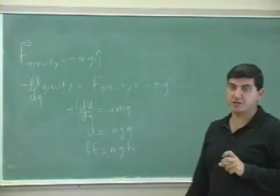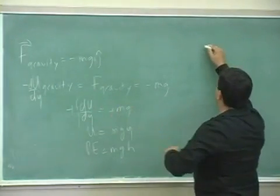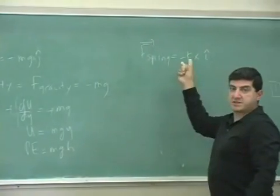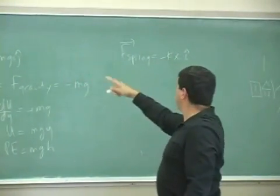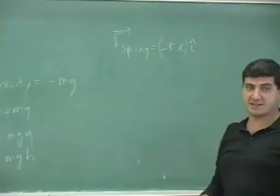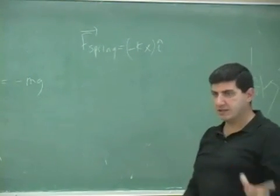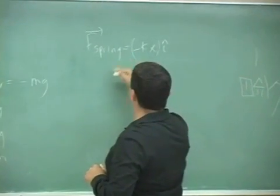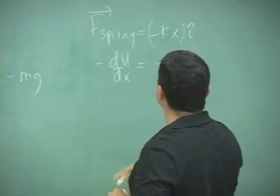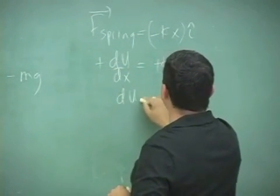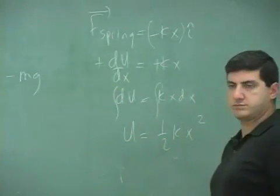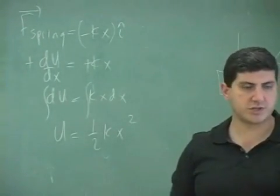The spring force is negative kx î — this is the lab we did last week. The spring force is also a conservative force because the x-component of the force only depends on x, with no y dependence. To find its associated potential energy function, you set negative dU/dx equal to negative kx, cancel the negatives, take dx to the other side, integrate both sides, and get U equals one-half kx squared.